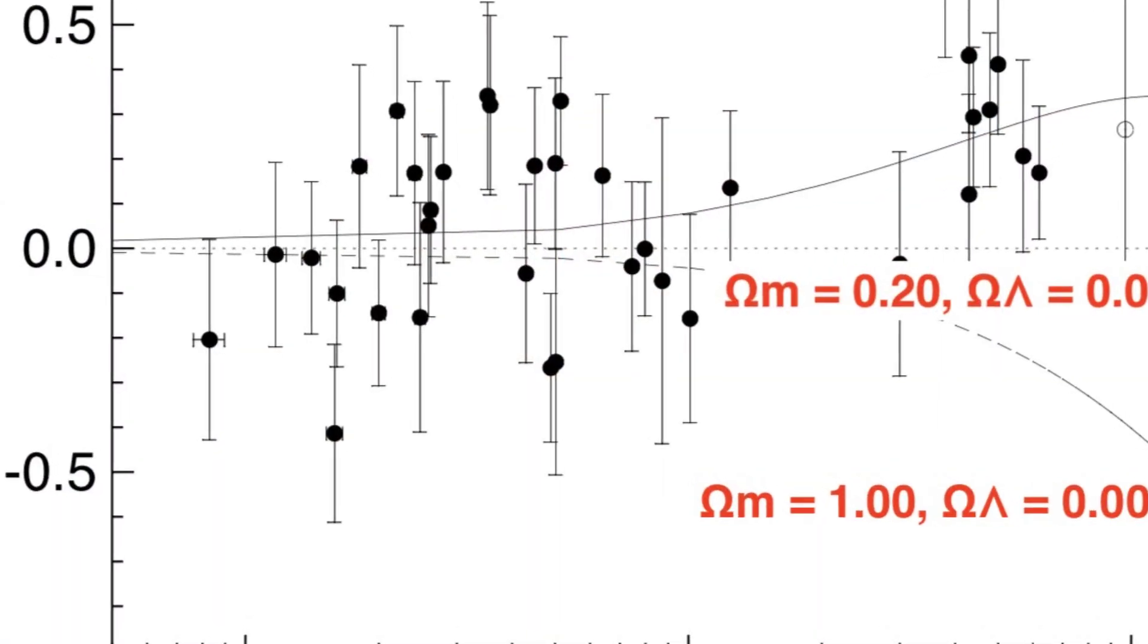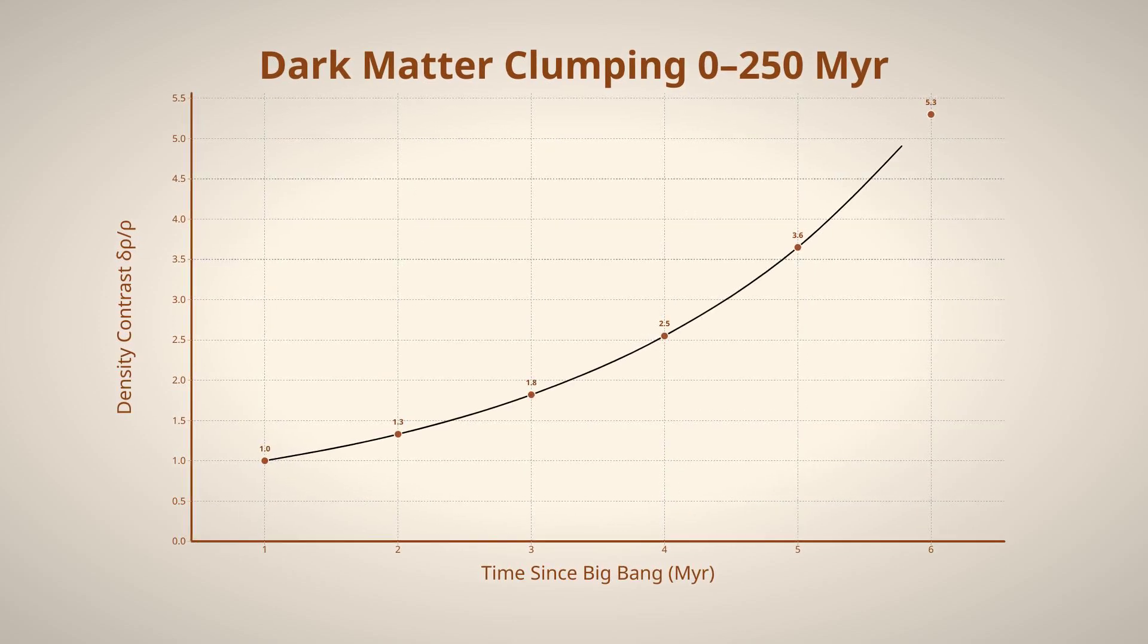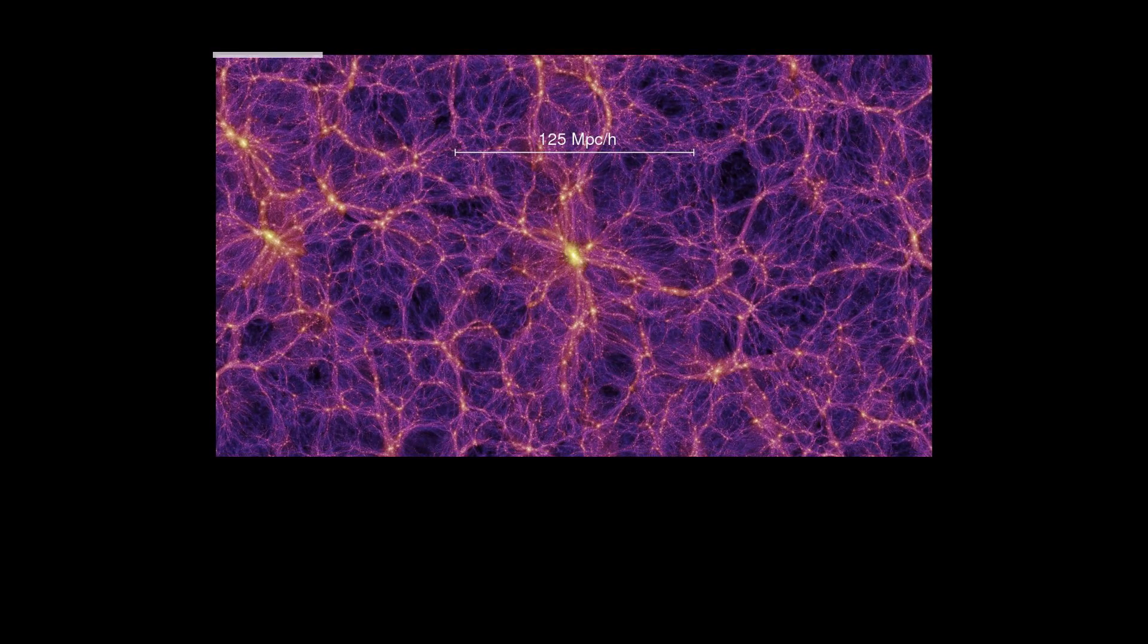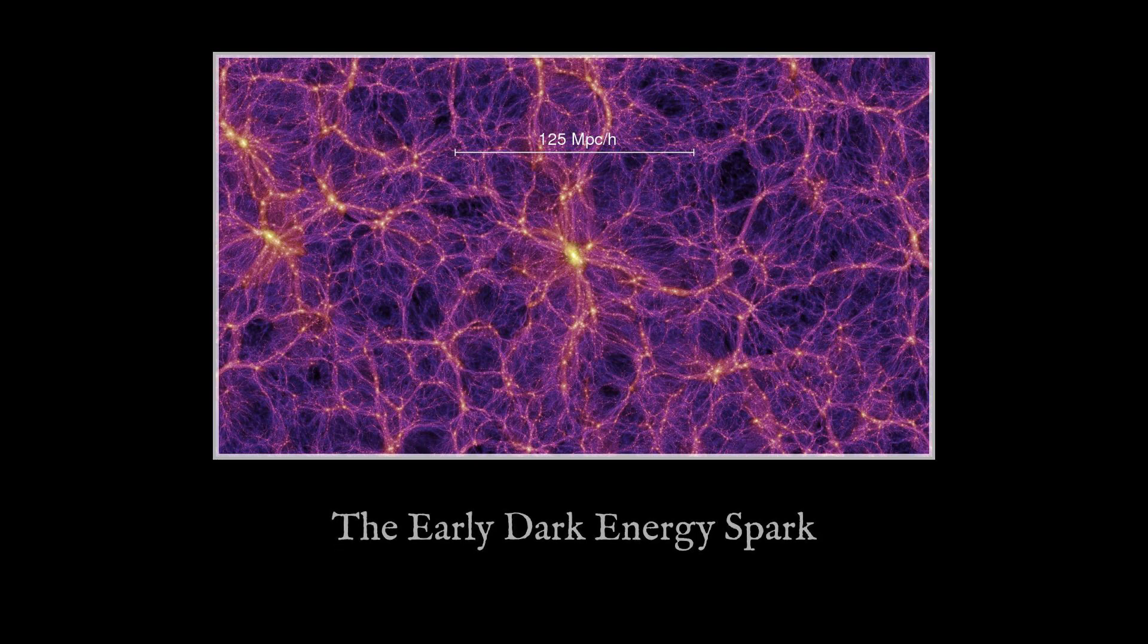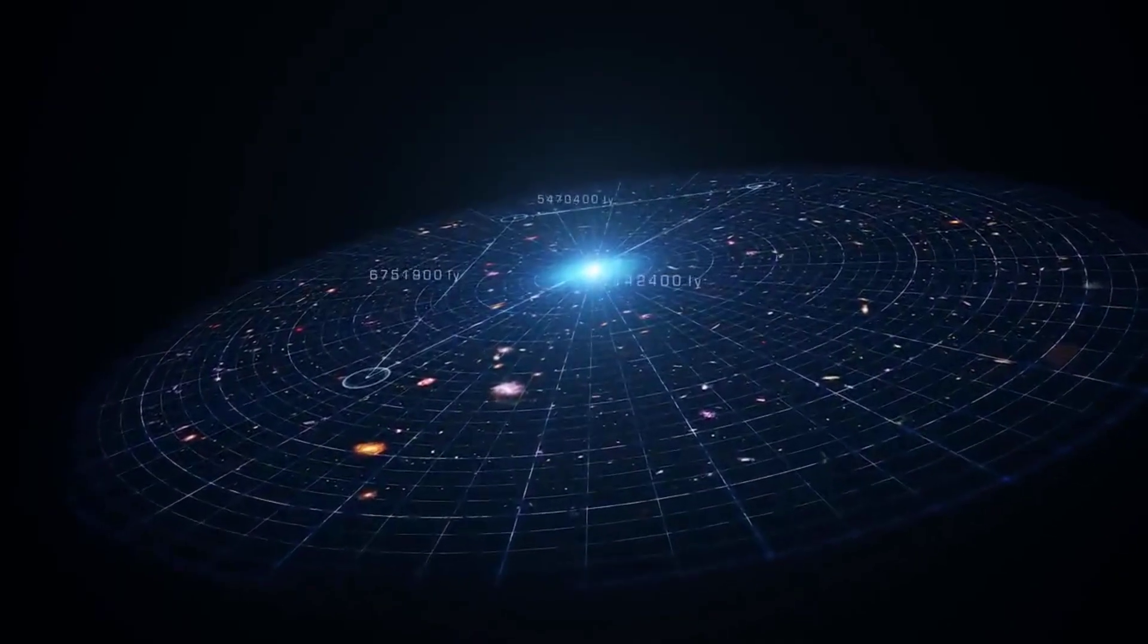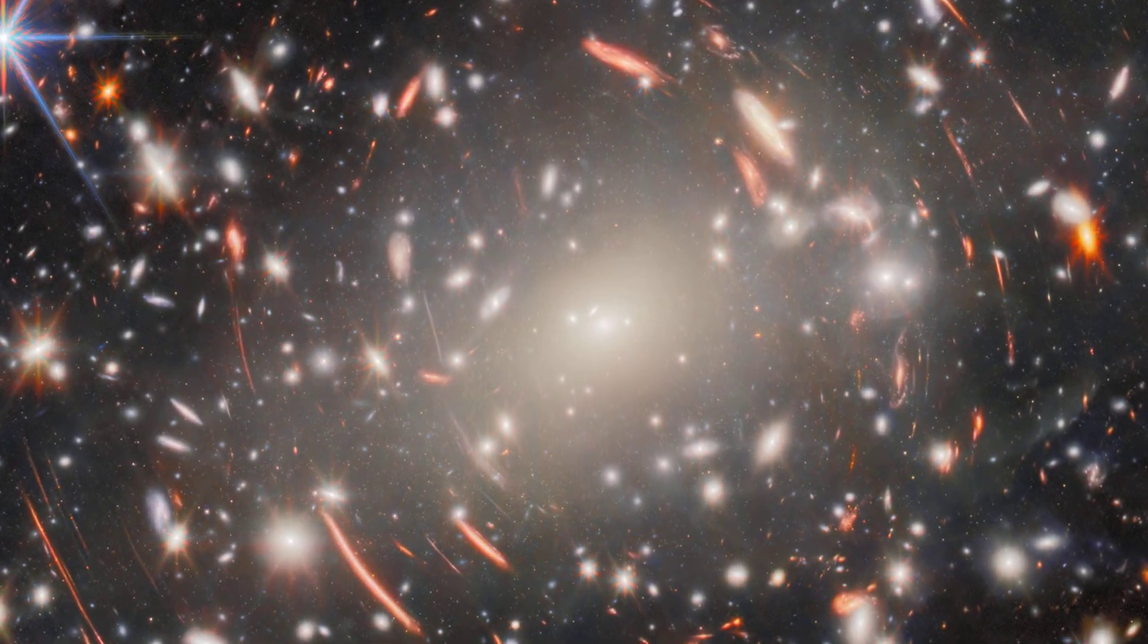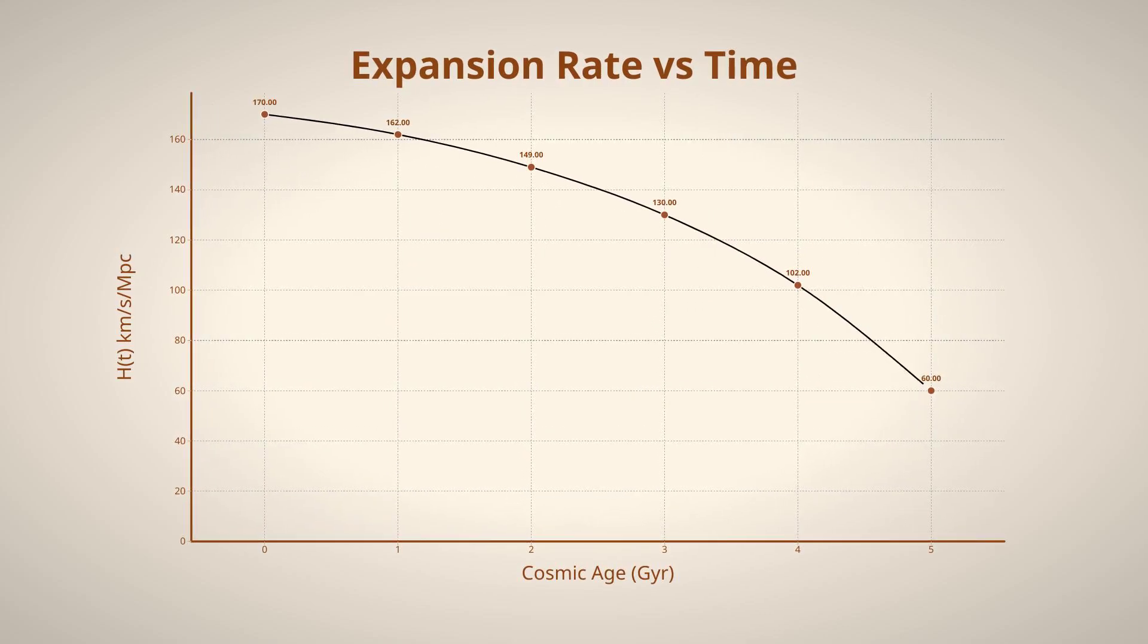Some scientists are now asking if our best models, like Lambda-CDM, are missing a piece. Could dark matter have clumped faster or acted differently in those early days? Or did some unknown ingredient, like early dark energy, give the universe a jumpstart? The Hubble tension, this stubborn mismatch between how fast the universe seems to expand now versus what the early universe tells us, just adds fuel to the fire. Webb's data isn't just a puzzle about galaxies, it's a clue that the cosmic clock itself might be off, or that the rules of cosmic expansion are more complicated than we guessed.